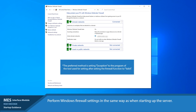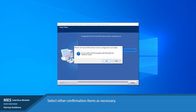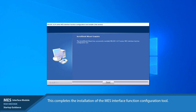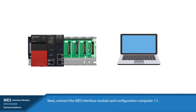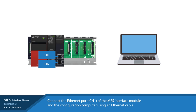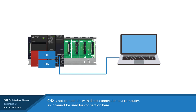Next, install the MES interface function configuration tool on the configuration computer. Follow the instructions on the computer and enter or select the necessary information. Perform Windows firewall settings in the same way as when starting up the server. Select other confirmation items as necessary. This completes the installation of the MES interface function configuration tool. Next, connect the MES interface module and configuration computer. Connect the Ethernet port CH1 of the MES interface module and the configuration computer using an Ethernet cable. Insert the SD memory card into the MES interface module.